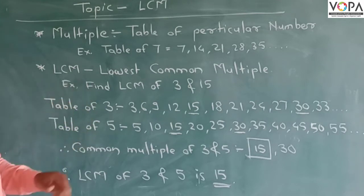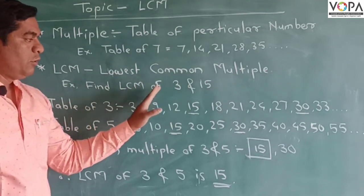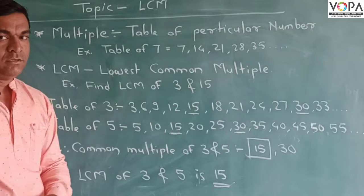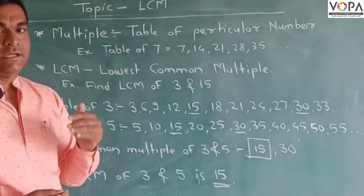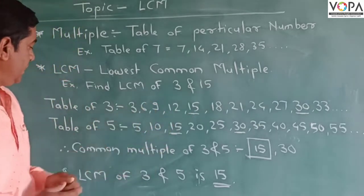So how to find LCM? Just take an example. Find LCM of 3 and 15. First we want to do the table of 3 and the table of 5.